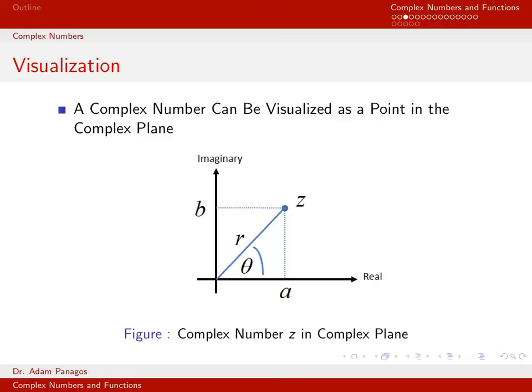At this point, we have defined what a complex number is. We've talked about the two different ways you can write a complex number, either in rectangular form or polar form. We've given an example of how you can visualize a complex number in the complex plane. In the next video, we'll start talking about operations that you can perform on complex numbers.